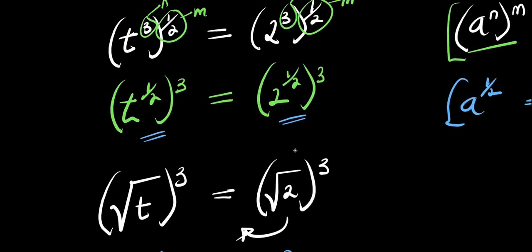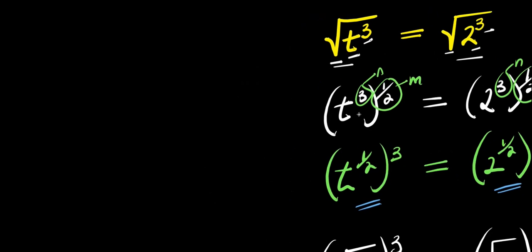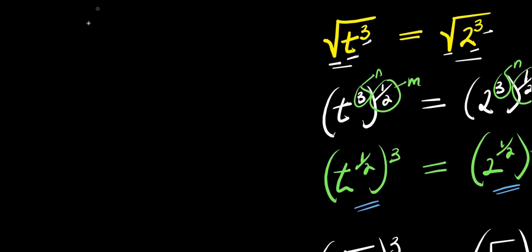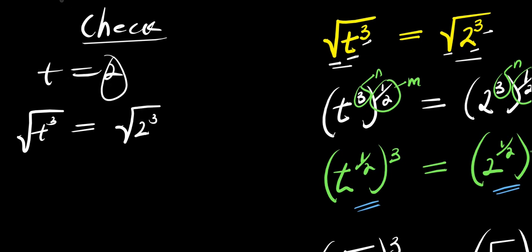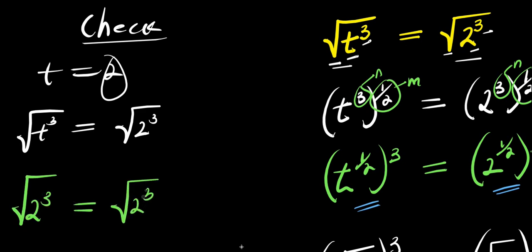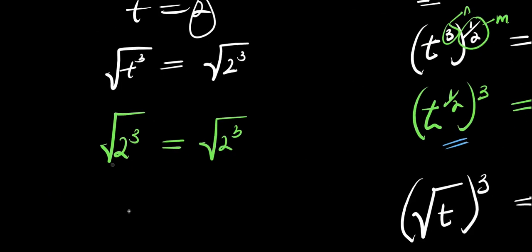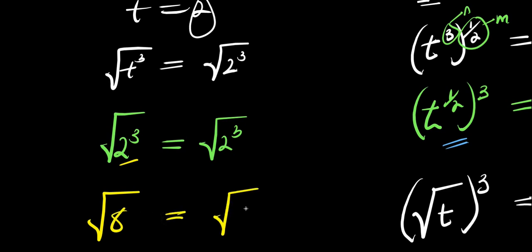Let's verify by checking t equals two. Inserting into the original equation: square root of two to the power of three equals square root of two to the power of three. Two cubed is eight, so we get square root of eight equals square root of eight, which is correct.